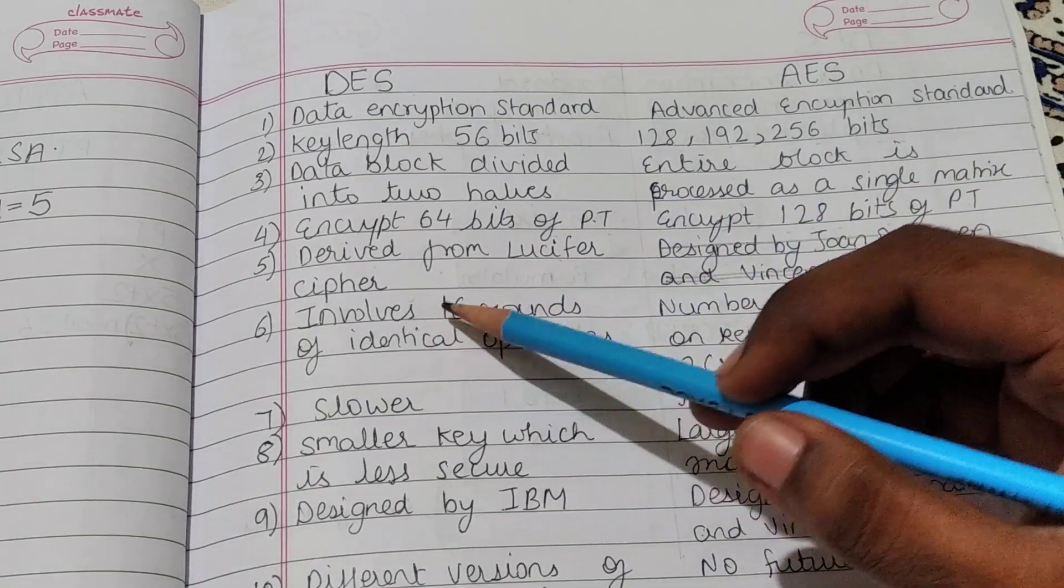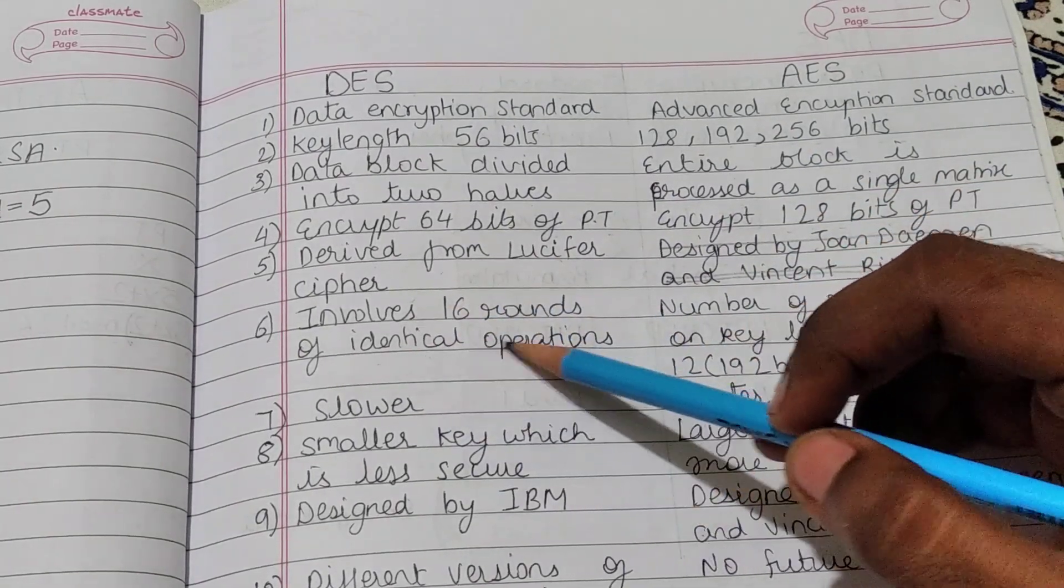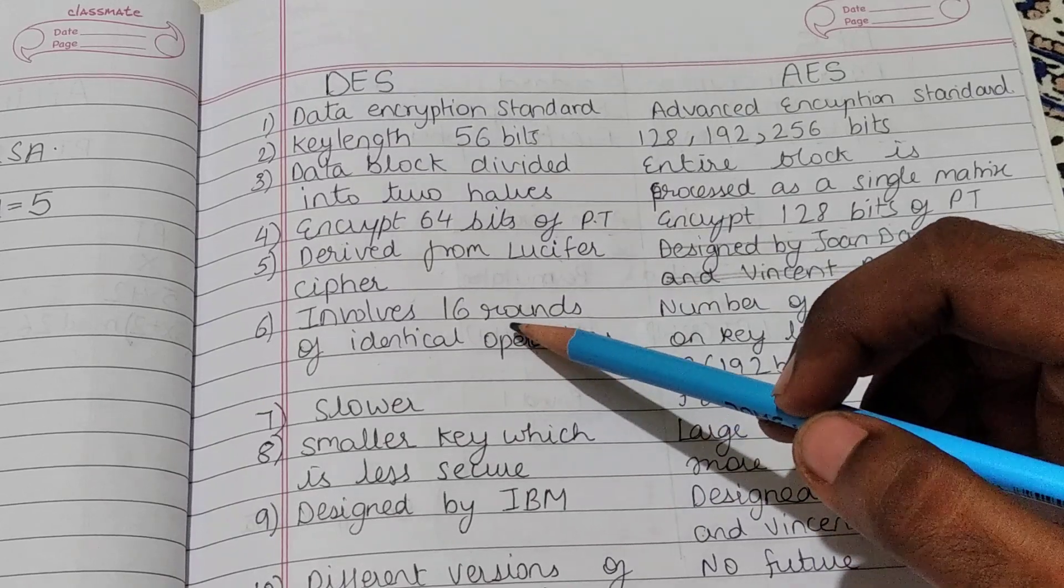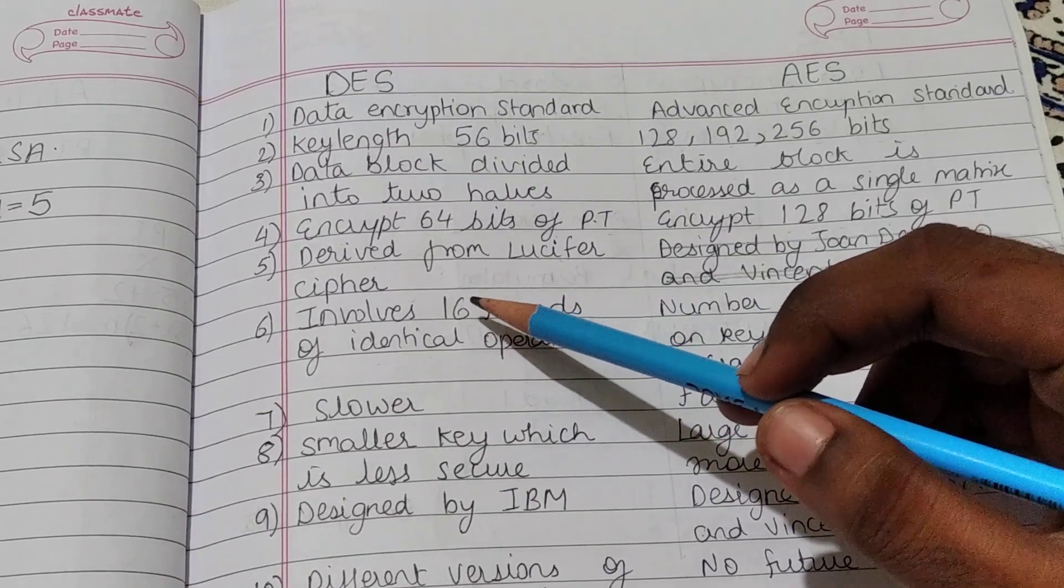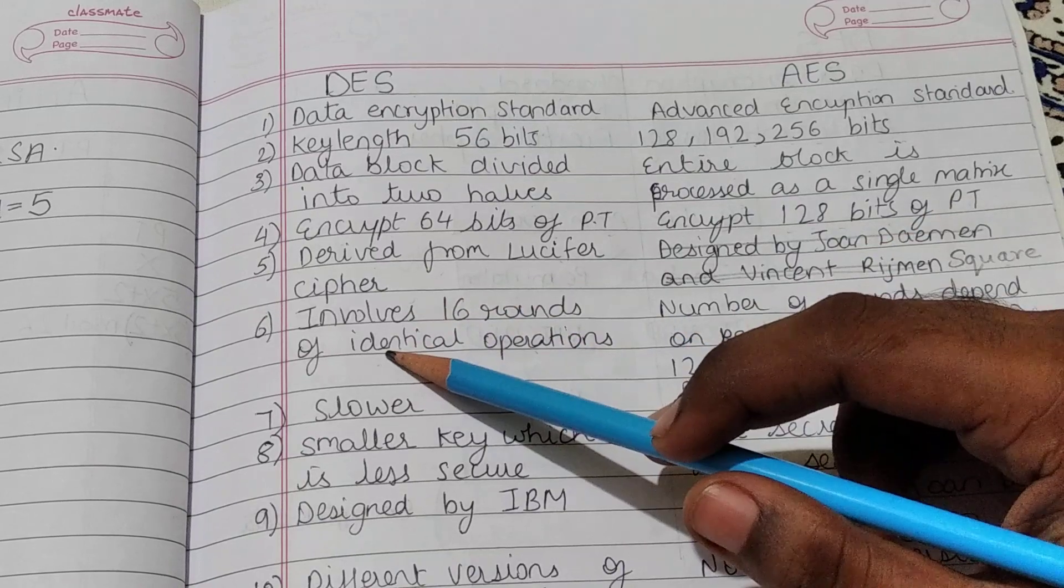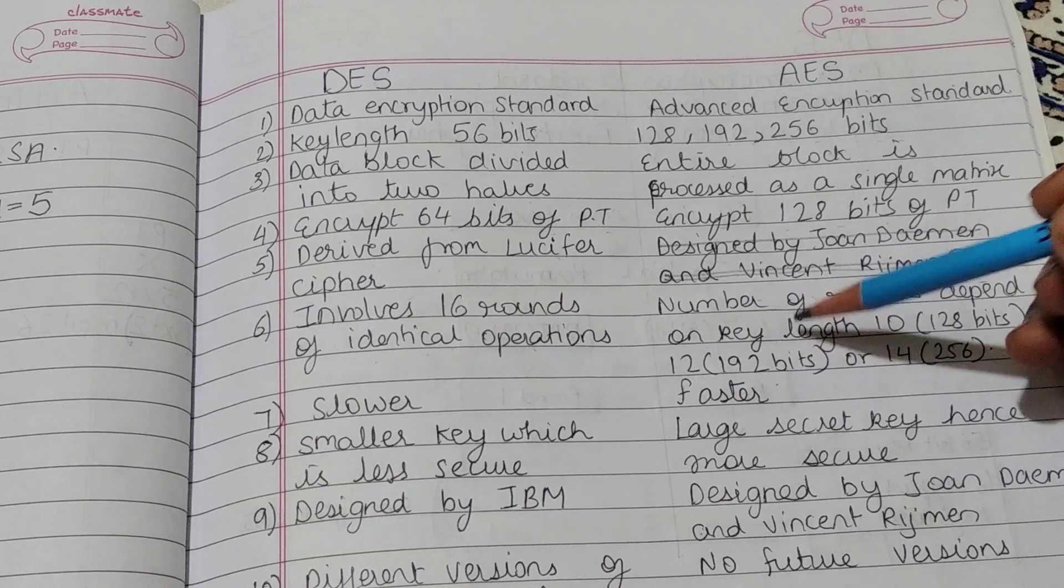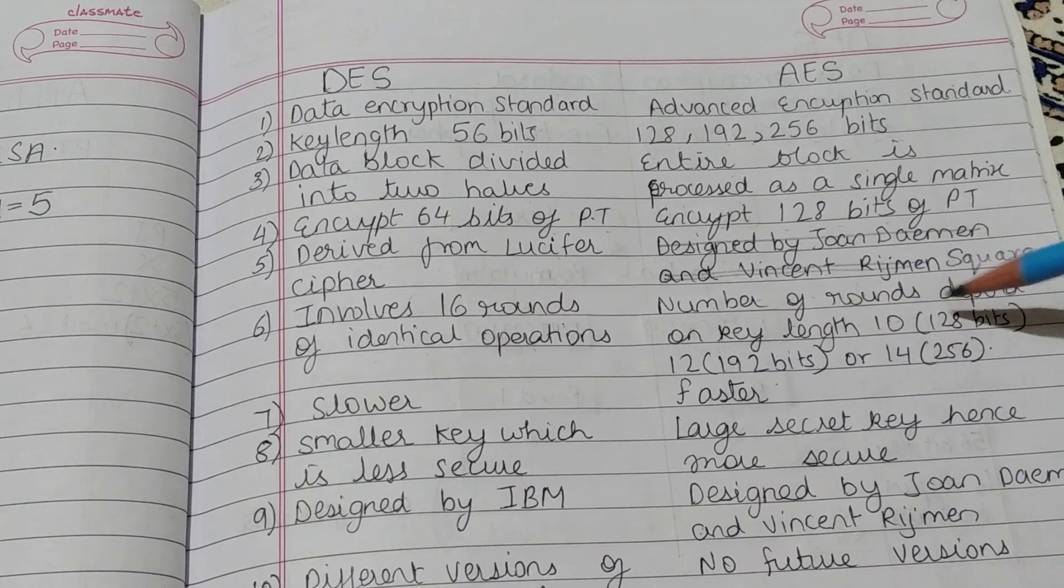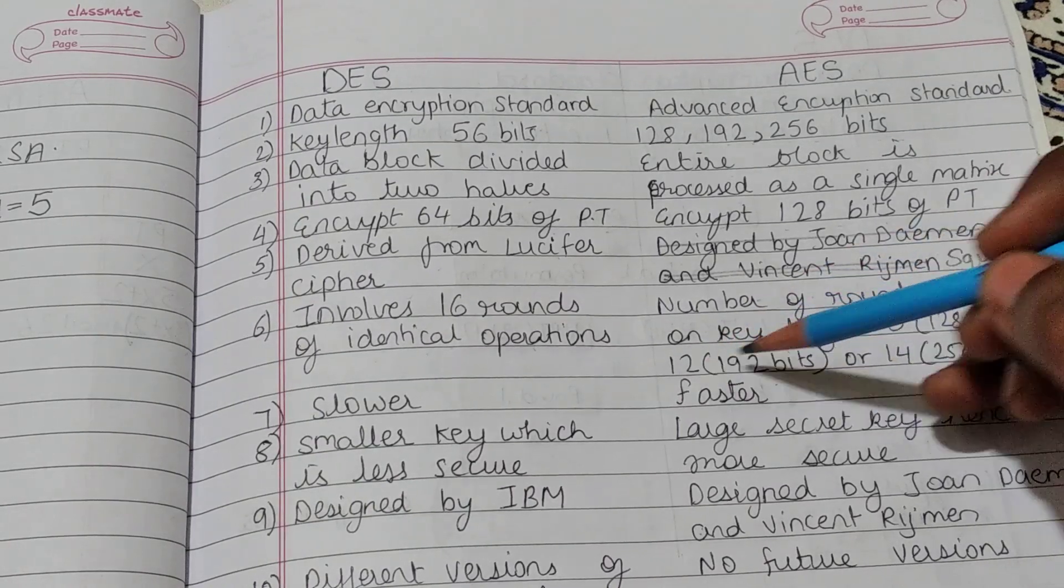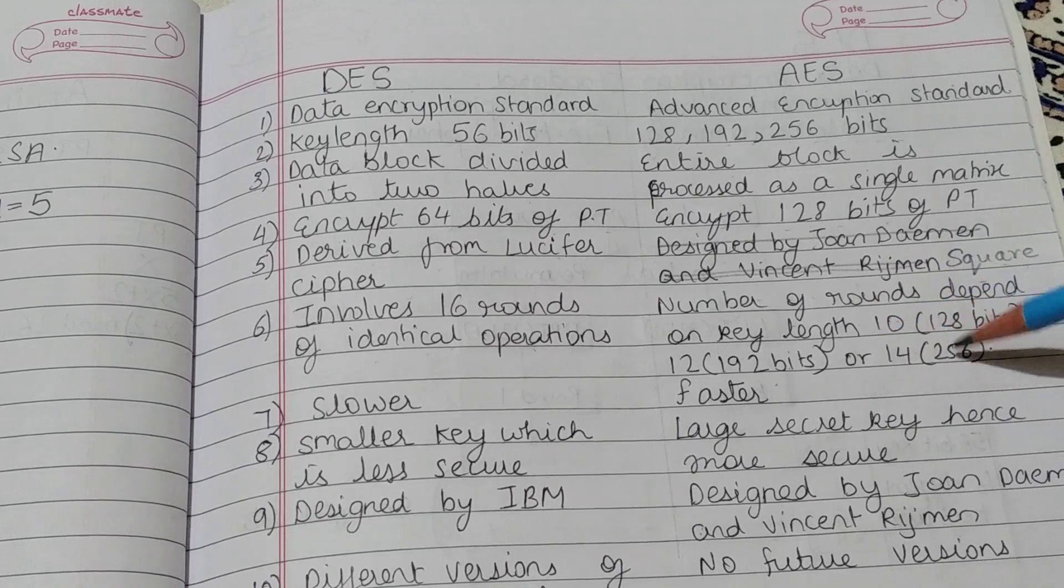DES involves 16 rounds of identical operations because 16 different keys are used. But in AES number of rounds depend on key length. That is 10 for 128 bits, 12 for 192 bits or 14 for 256 bits.